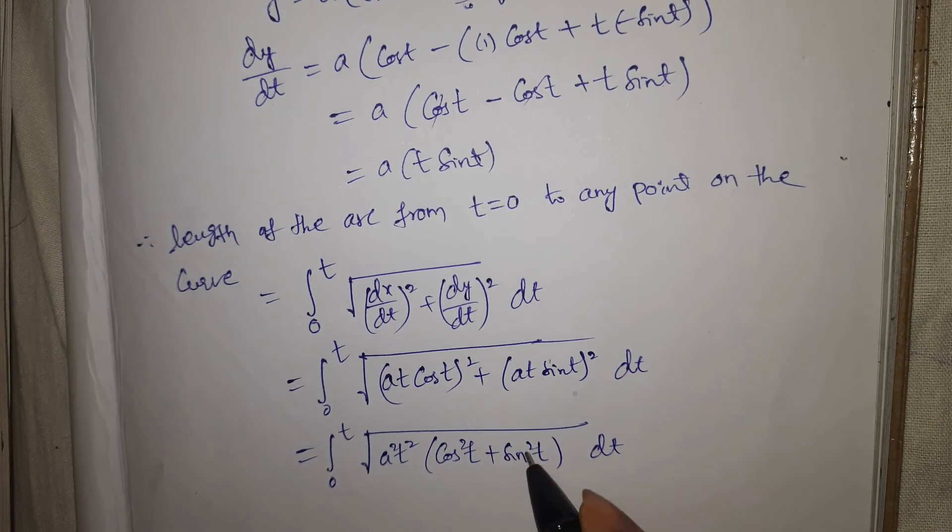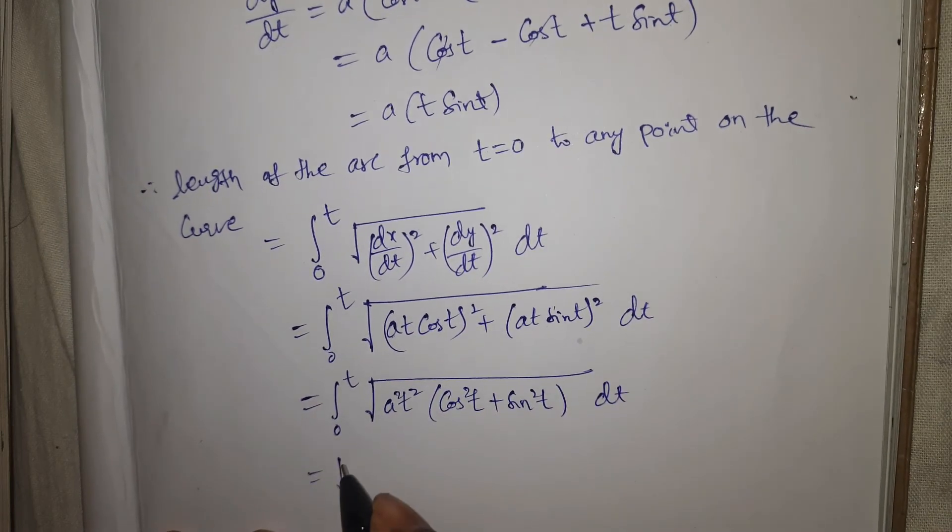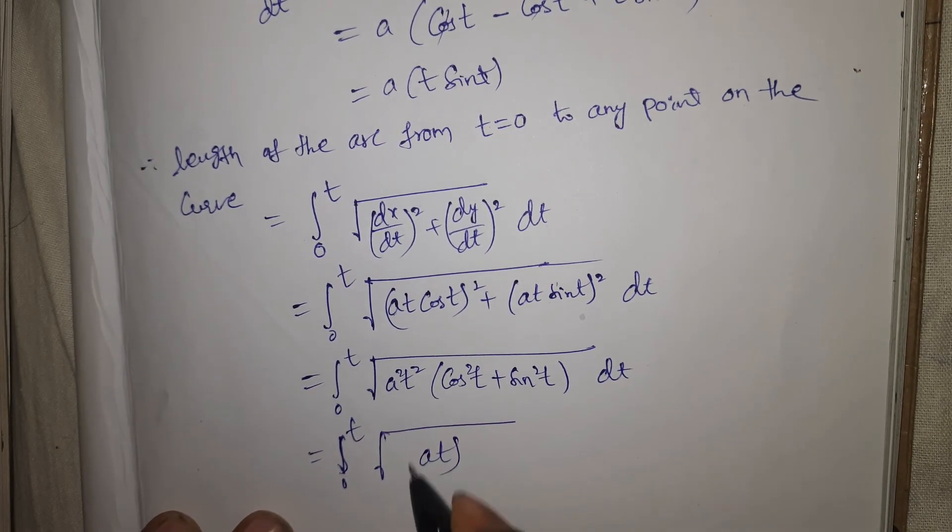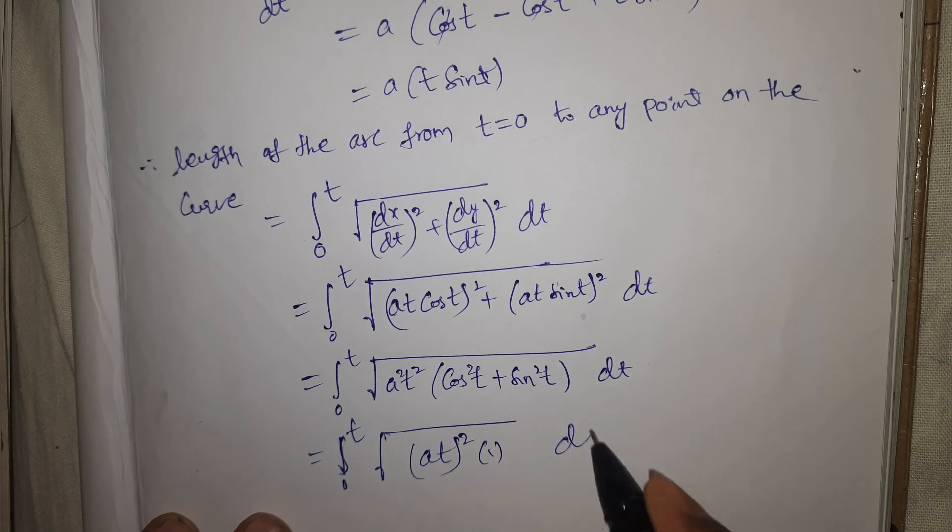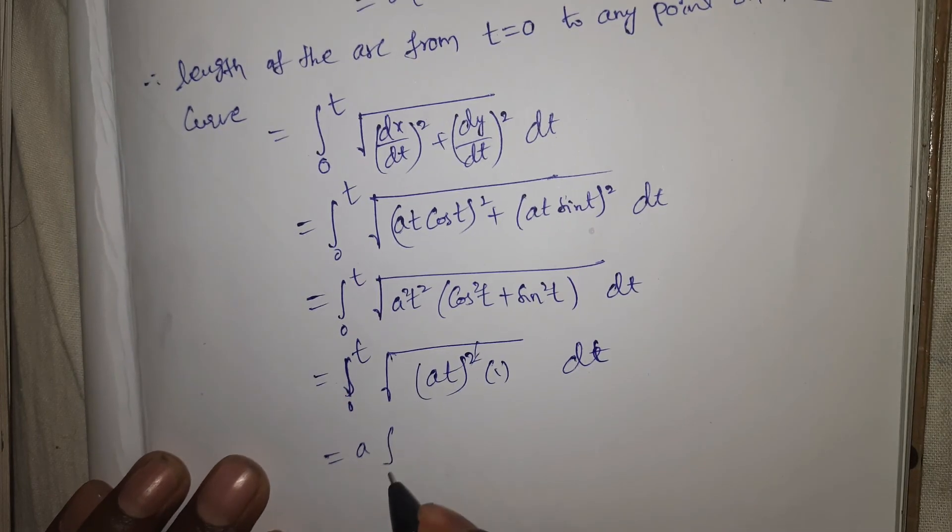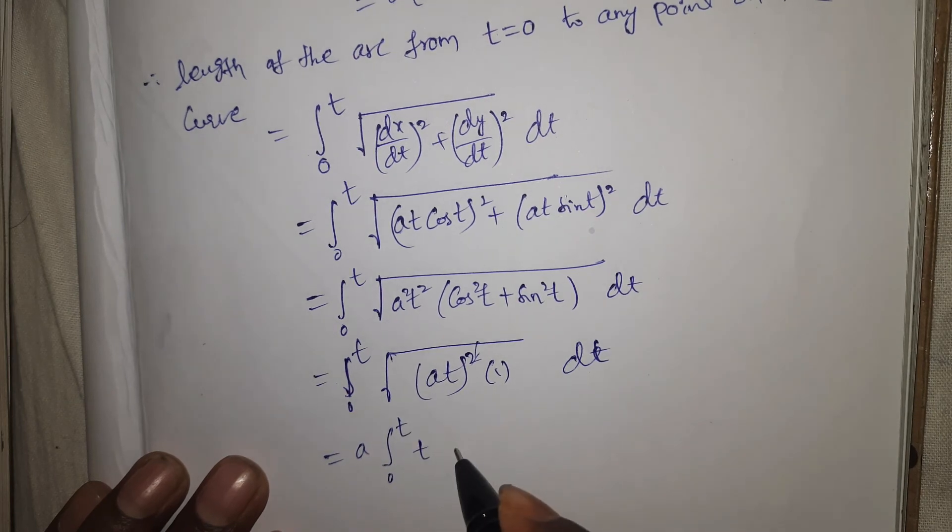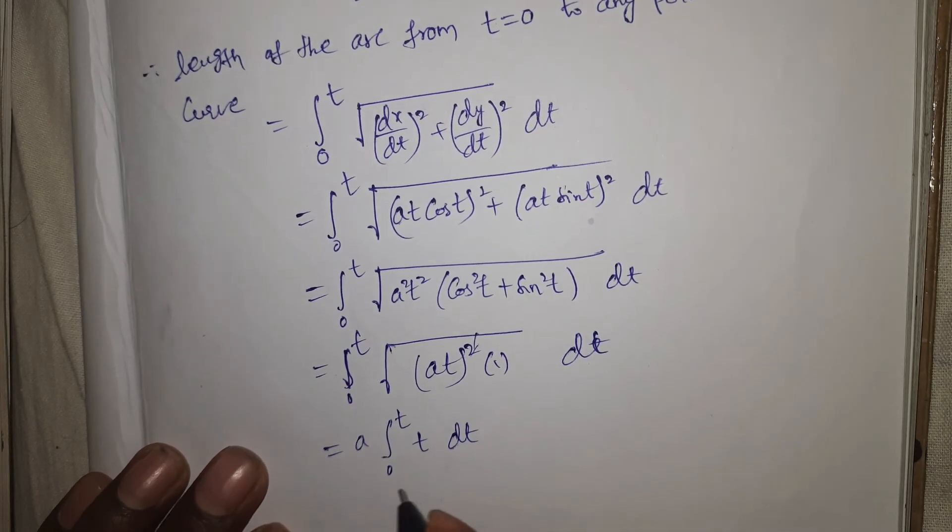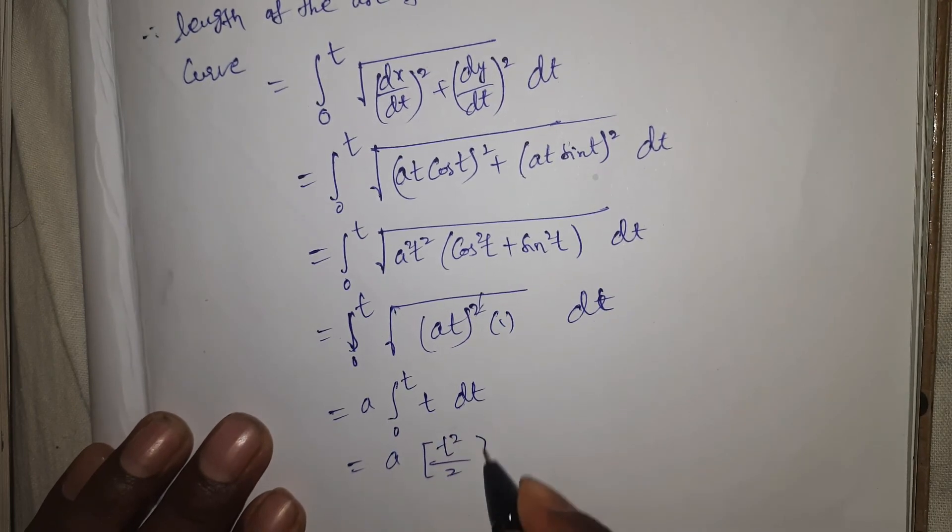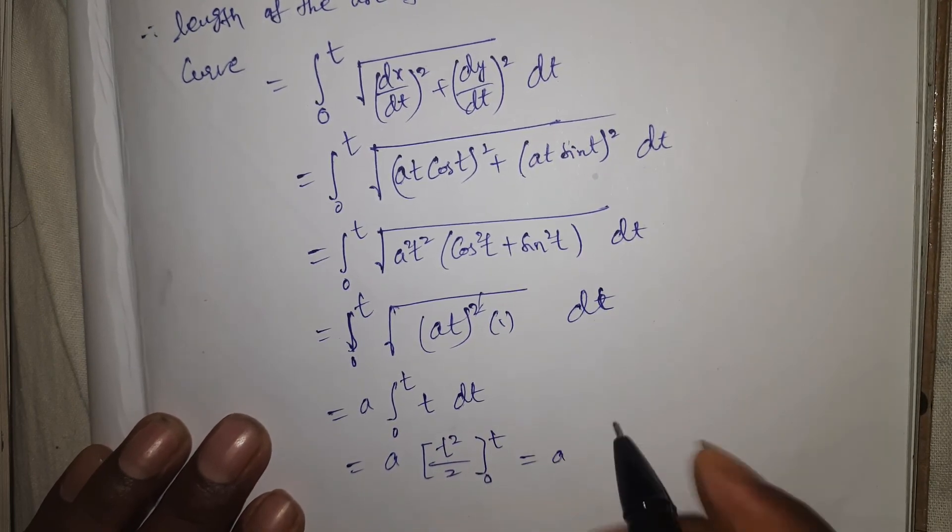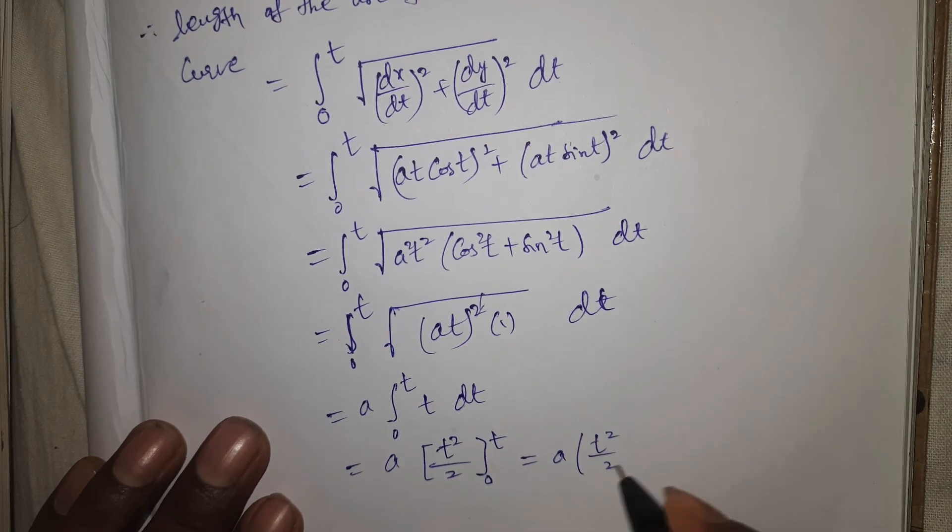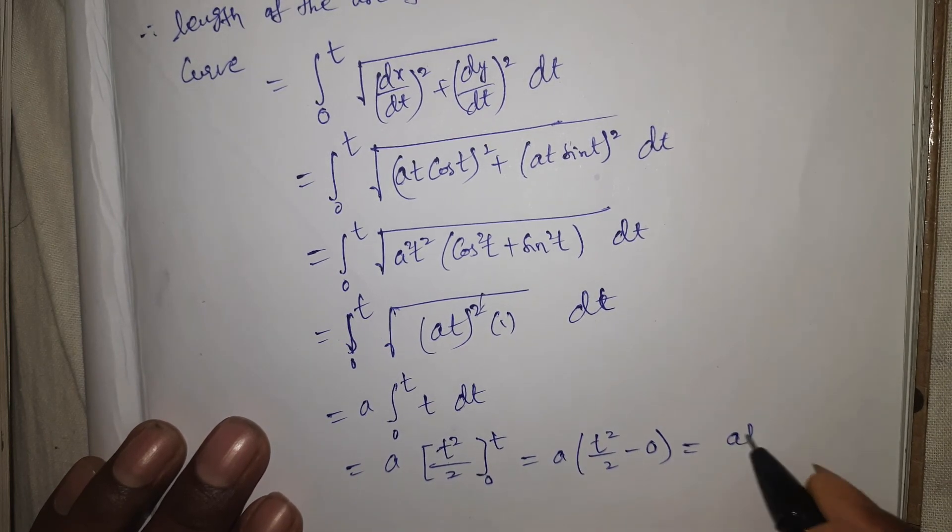Integral from 0 to t of √[a²t²(1)] dt. Square root cancels, taking constant a outside: a∫t dt = a[t²/2] from 0 to t. Upper limit t gives t²/2, minus 0 equals at²/2.